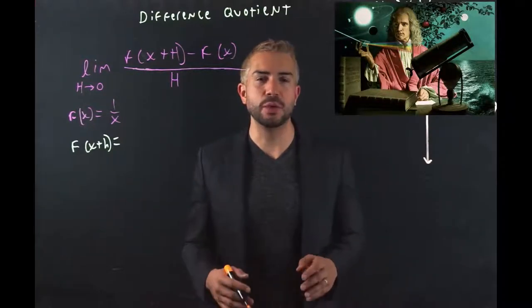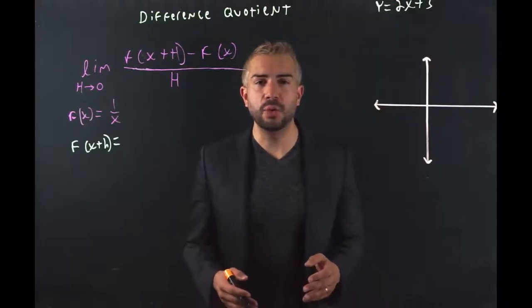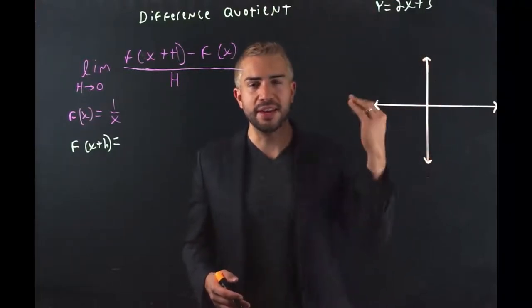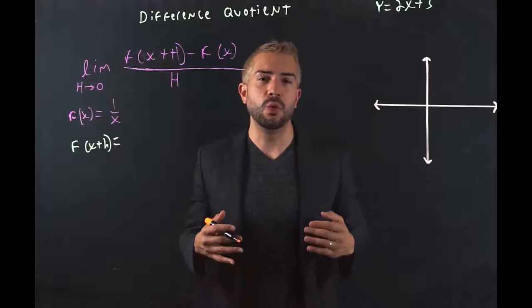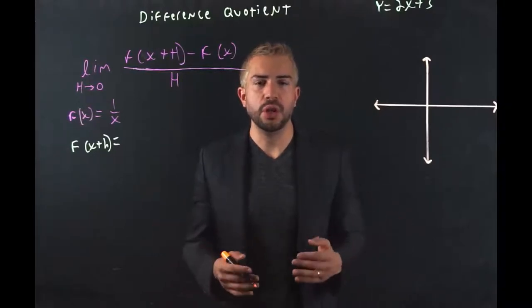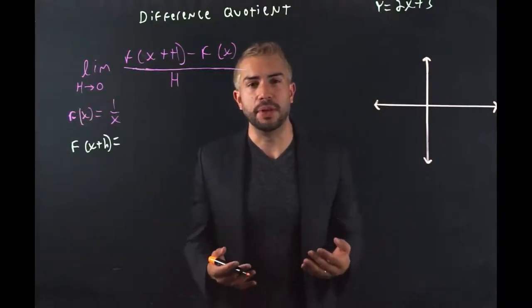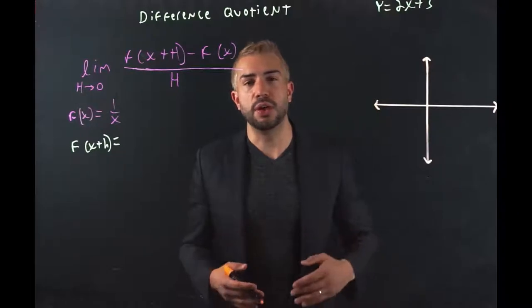The difference quotient was first formulated by Sir Isaac Newton. Yes, he was the same guy that was chilling, hanging out under a tree when all of a sudden an apple came down and hit his head. And then he wondered, why do all things rush towards Earth? Well, it's really because of gravity. And later on he helped develop the laws around gravitational pull.